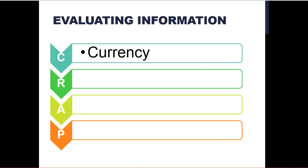One popular way to evaluate your sources is to do the CRAP test. The C is for currency. Is the information up to date? The R is for reliability. Can you trust it? Does the author cite its sources?